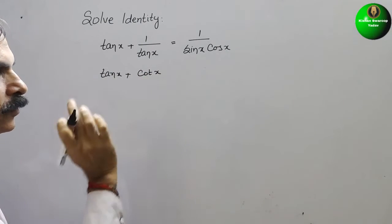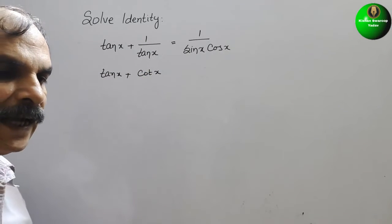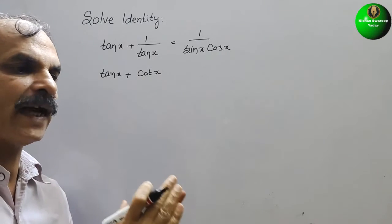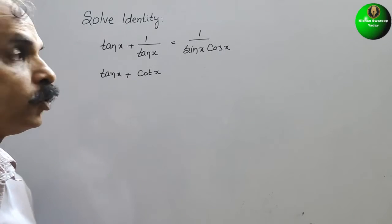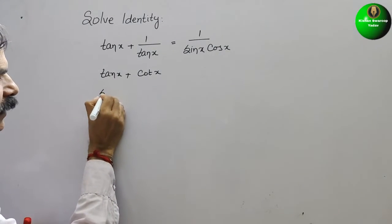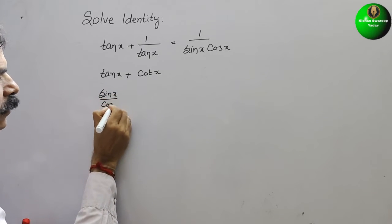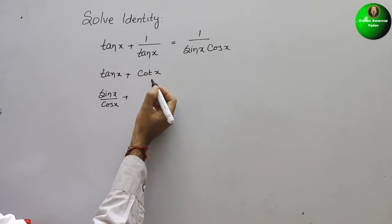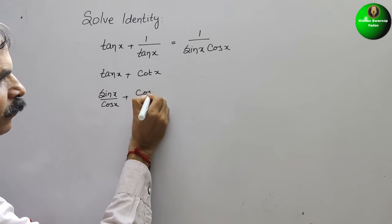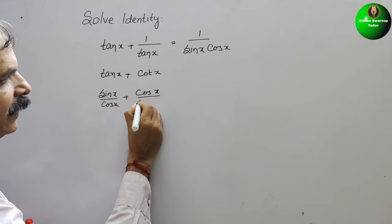Now, just we have to convert this tan and cot in terms of sin and cos. So tan x is nothing but sin x by cos x plus this cot x is cos x by sin x.